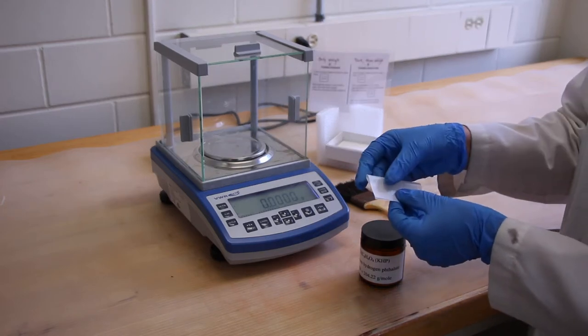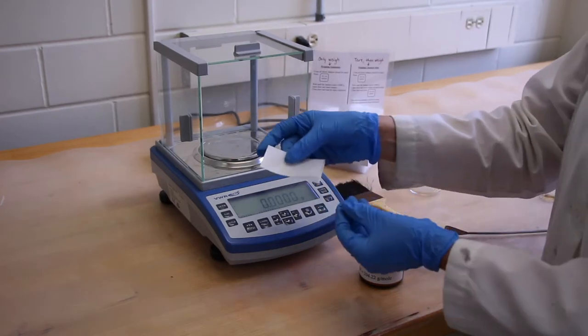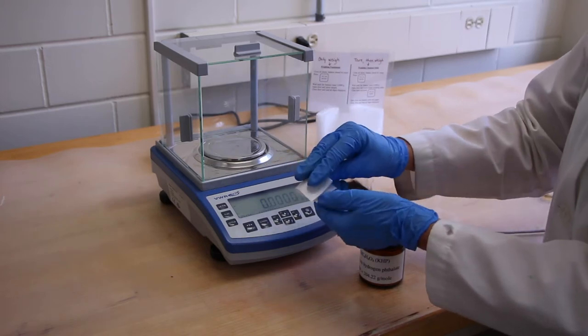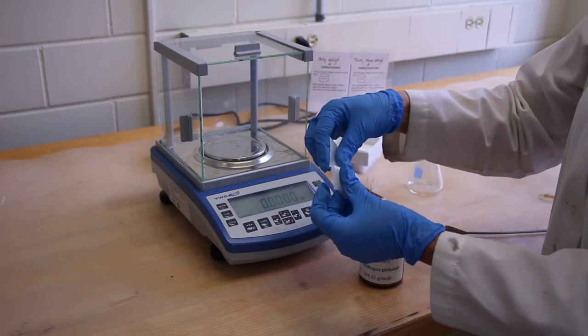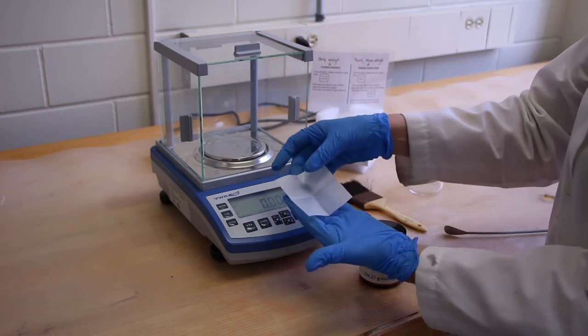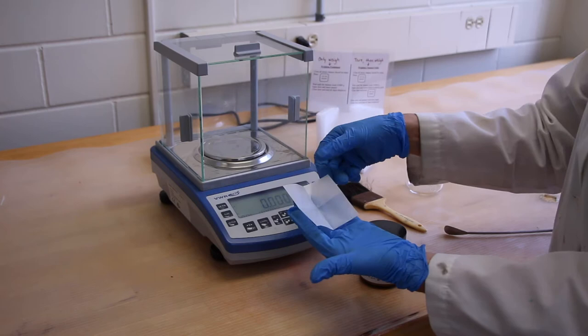And good technique is first fold your weigh paper in half, and then in half again. So that when you open it up, it does not lie flat.